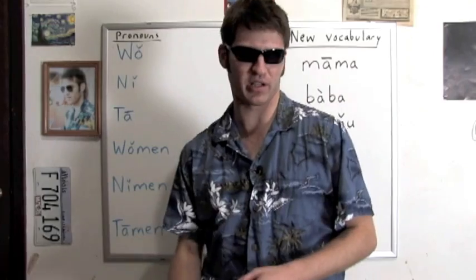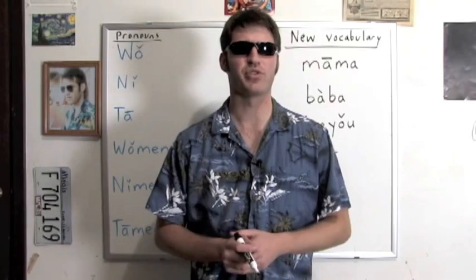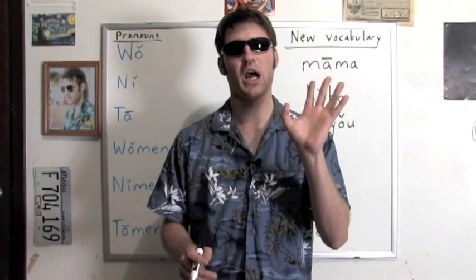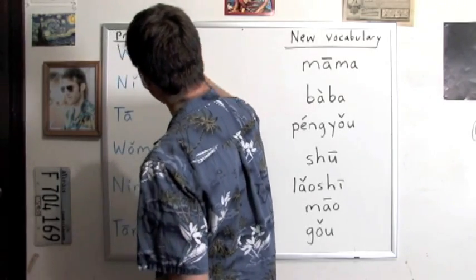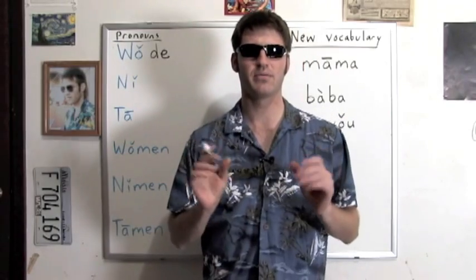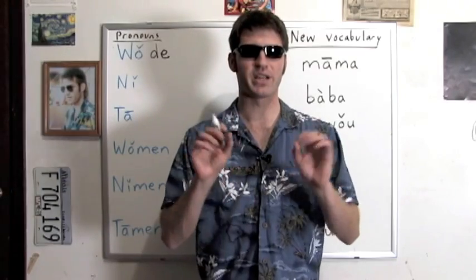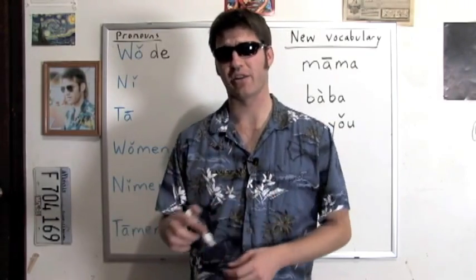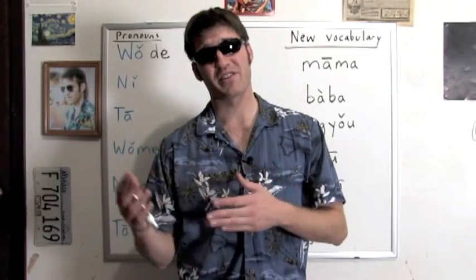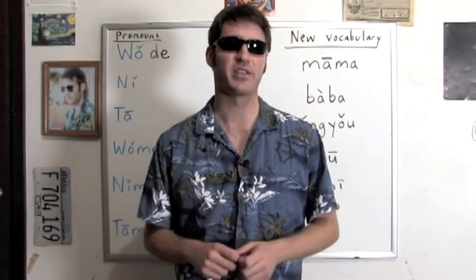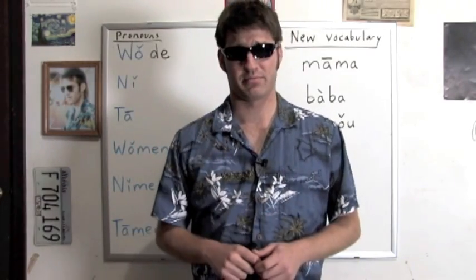Now, how do I make those possessive? In English I have to take 'I' and make it 'my' — a completely different word. Well, guess what? Chinese is easier. All I have to do is add a word called 'de.' It's another particle — D, E — neutral tone. So 'wǒ' becomes 'wǒ de,' which means 'my' or 'mine.' In English we differentiate between possessive adjectives like 'my book' and possessive pronouns like 'that book is mine.' In Chinese it's all the same — just like 'wǒ' can be 'I' or 'me,' 'wǒ de' can be 'my' or 'mine.' Awesome.